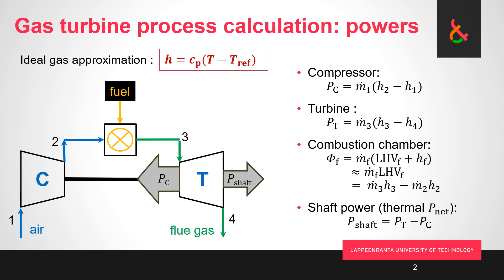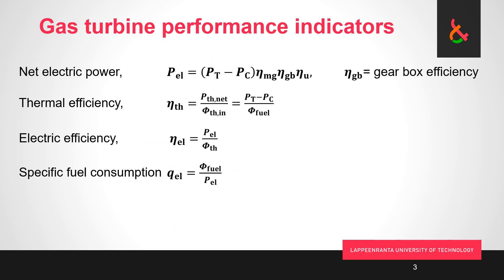Gas turbine performance indicators. These are very similar to the performance indicators that we had with the steam cycle power plant, but some notable differences. Generally speaking these ones are a little bit easier because our process, our prime mover is a whole lot simpler, so less things to care about.